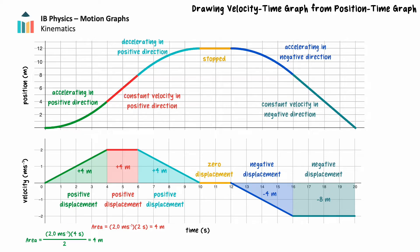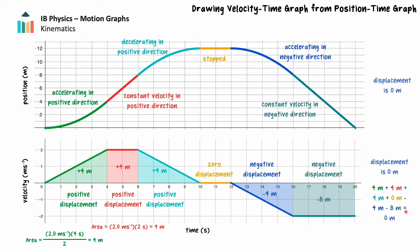From the position-time graph, we can see the displacement in the first 20 seconds of motion is 0 — the object begins and ends at the same position. From the velocity-time graph, we can calculate the displacement in the 20 seconds of motion by adding the areas for each segment of the journey. The total area is 0 meters, therefore the displacement is 0 meters.